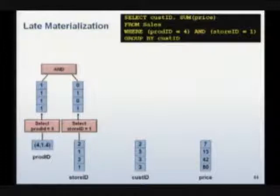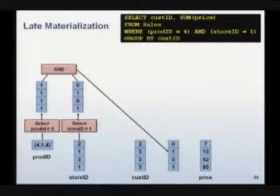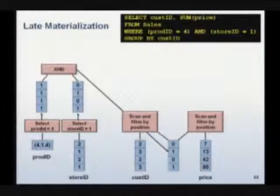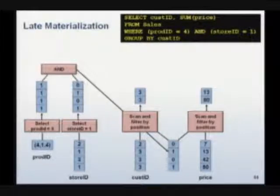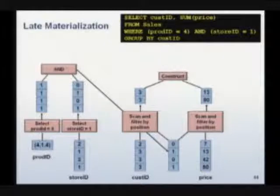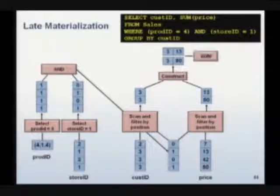Then the database system adds these things together to produce that bit vector down there in the middle: 0, 1, 0, 1. Then we start scanning the other two columns. The database system uses that bit vector to figure out what values it should pick up. It keeps things in order and finally glues them together to produce rows.